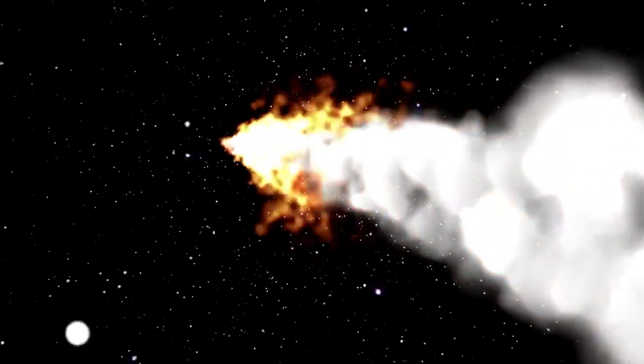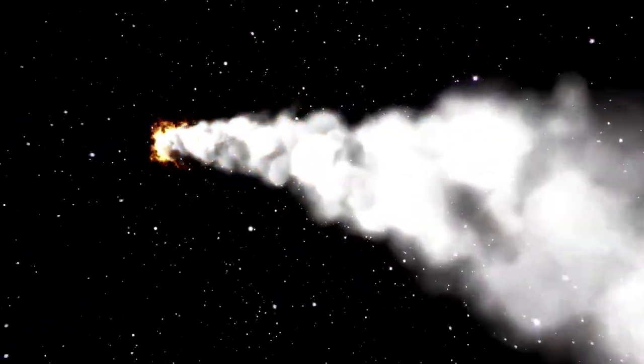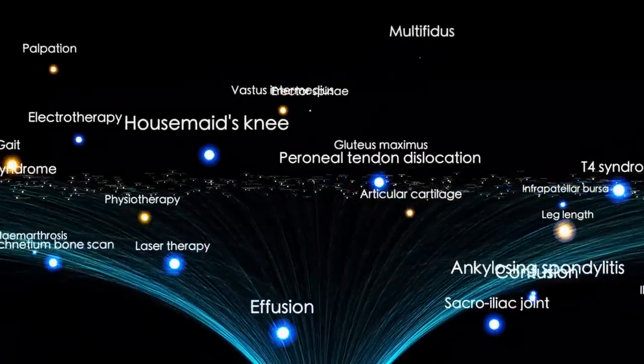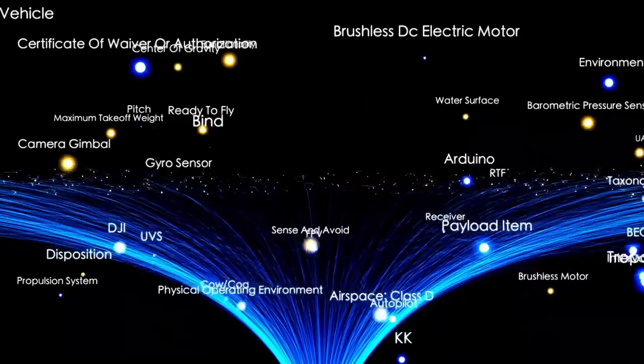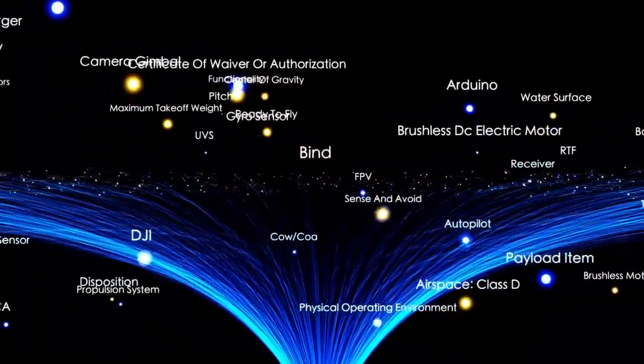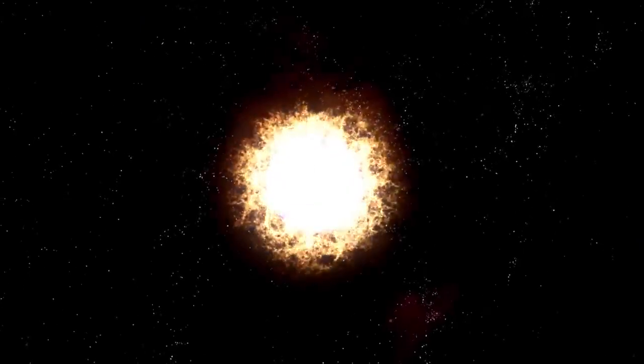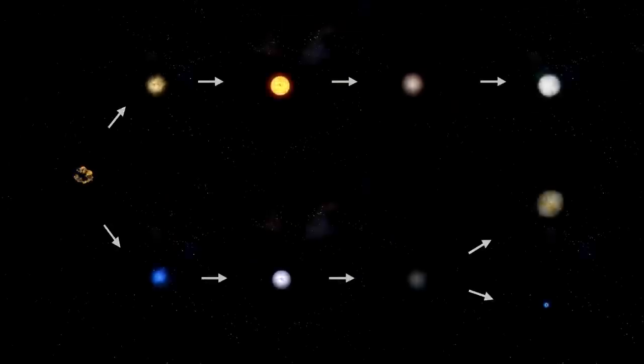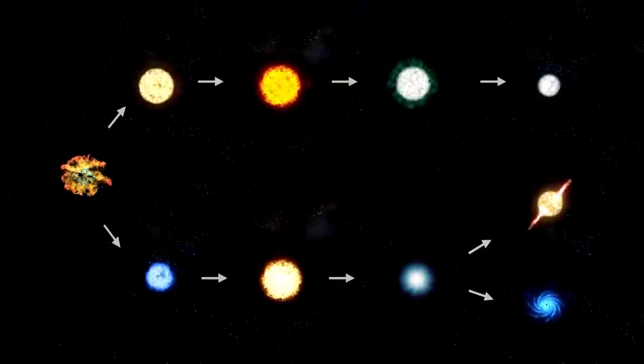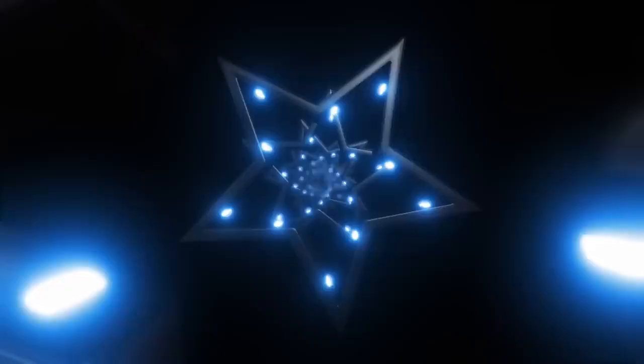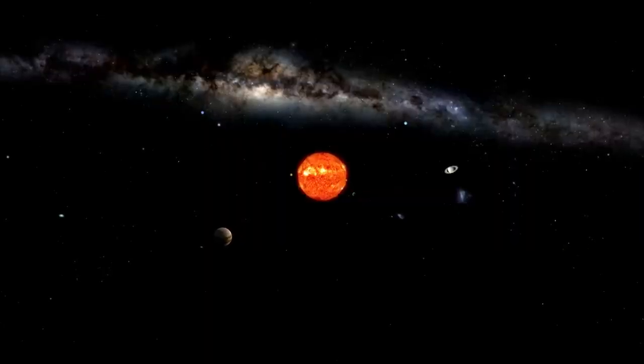More than just enormous, Betelgeuse is in a critical stage of its life known as the red supergiant phase. After billions of years fusing hydrogen into helium, it is now burning through heavier elements and slowly losing mass. Despite being around 8 to 8.5 million years old, a relatively young age in human terms, it's ancient by stellar standards. Massive stars like Betelgeuse live fast and die young, and its current state signals that the end may be near.